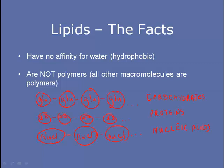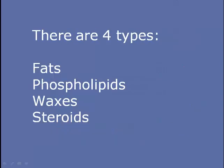For example, we've already seen that carbohydrates are made up of repeating subunits of glucose, and we'll find out that proteins are made up of repeating subunits of amino acids, and nucleic acids are made up of repeating subunits of nucleotides. But lipids are not made up of repeating subunits. There are four types of lipids: fats, phospholipids, waxes, and steroids.